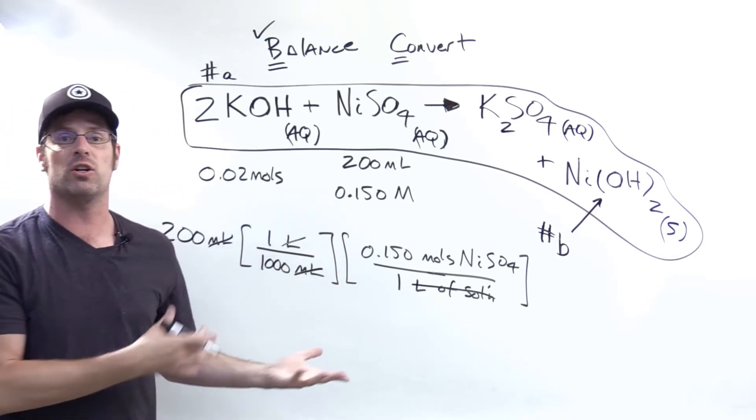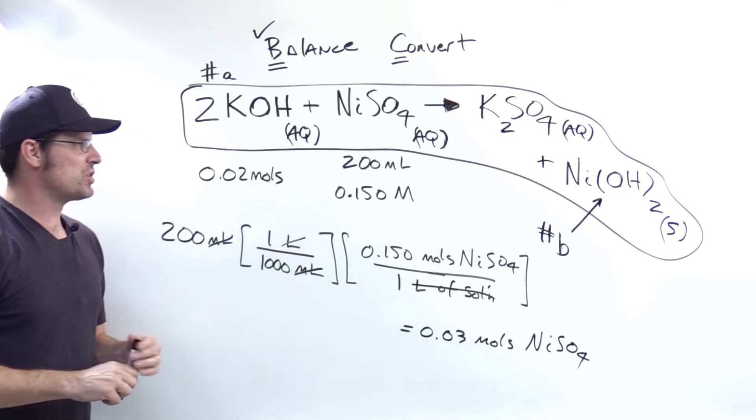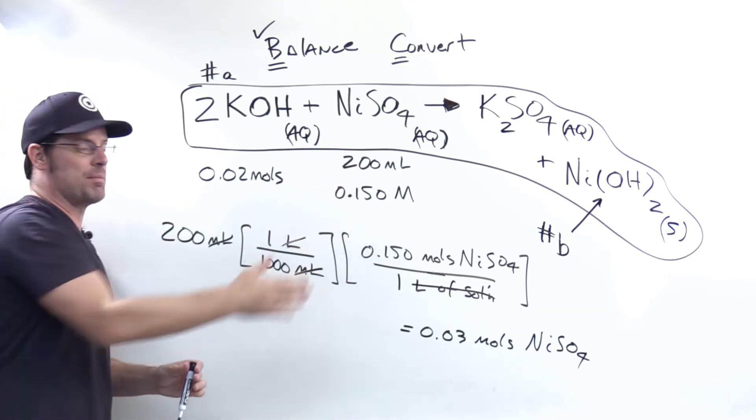I'm left with units of moles nickel sulfate. Plug and chuck on your calculator, and you'll see that this translates to 0.03 moles nickel sulfate. So I'm going to replace these numbers with that one.